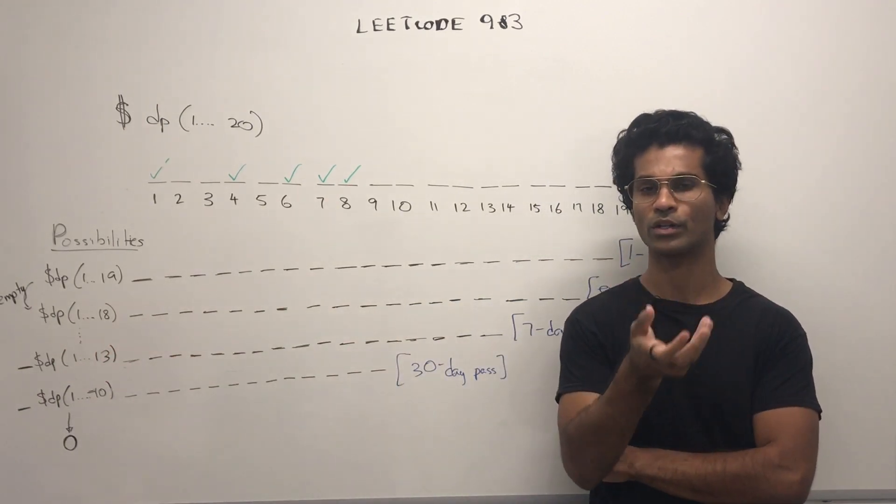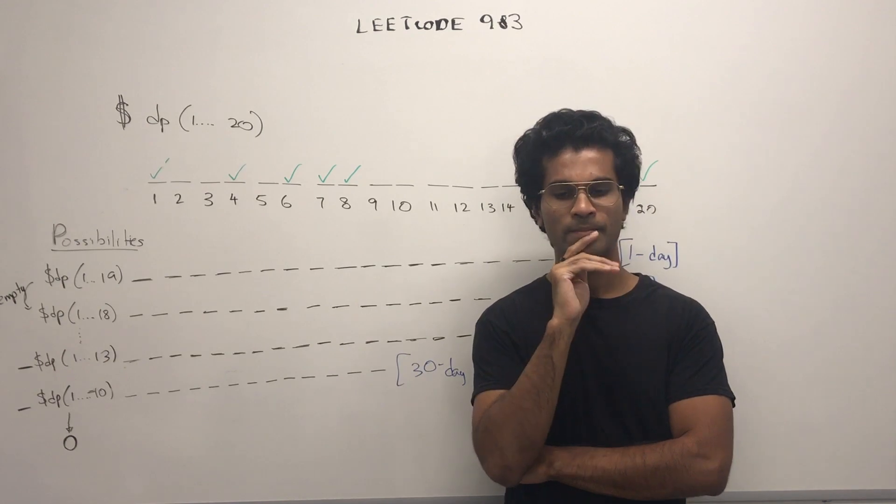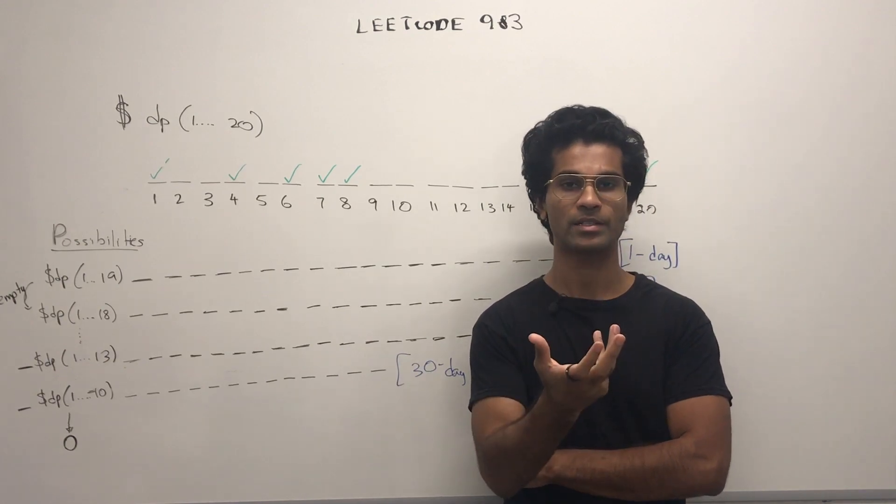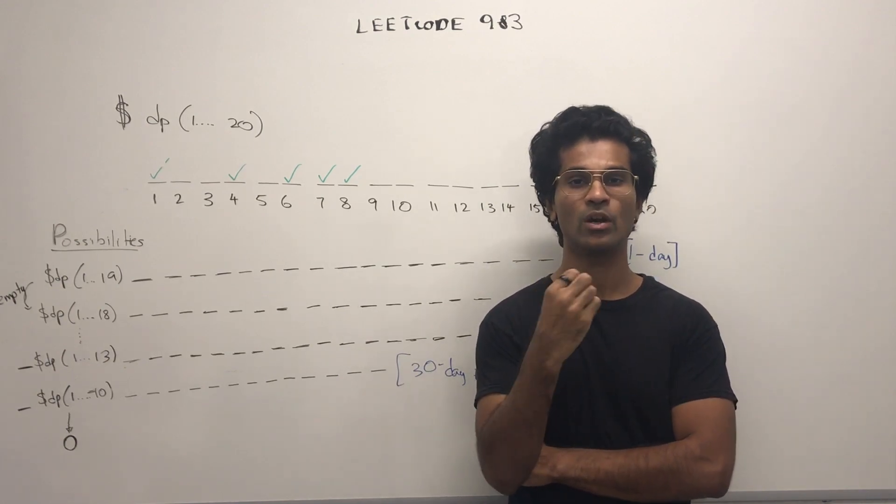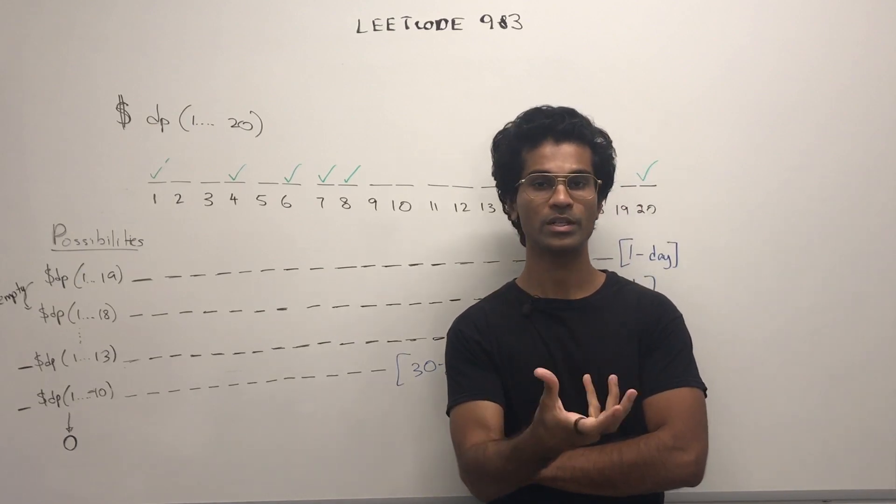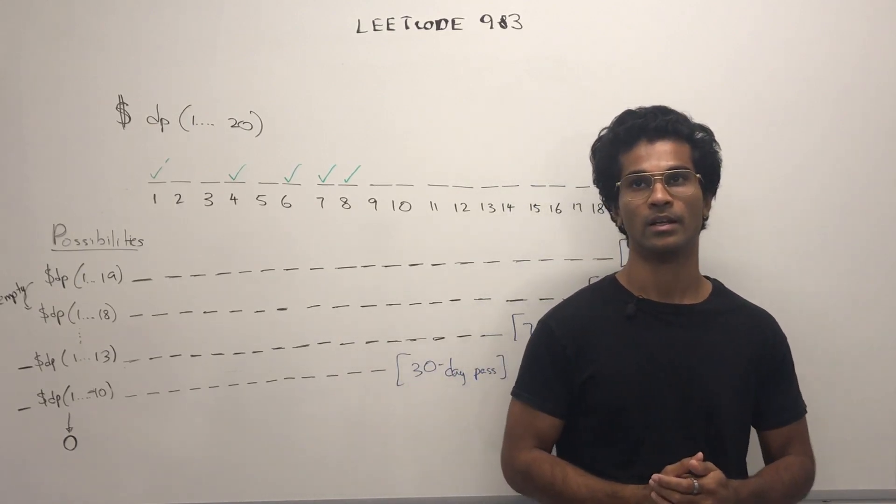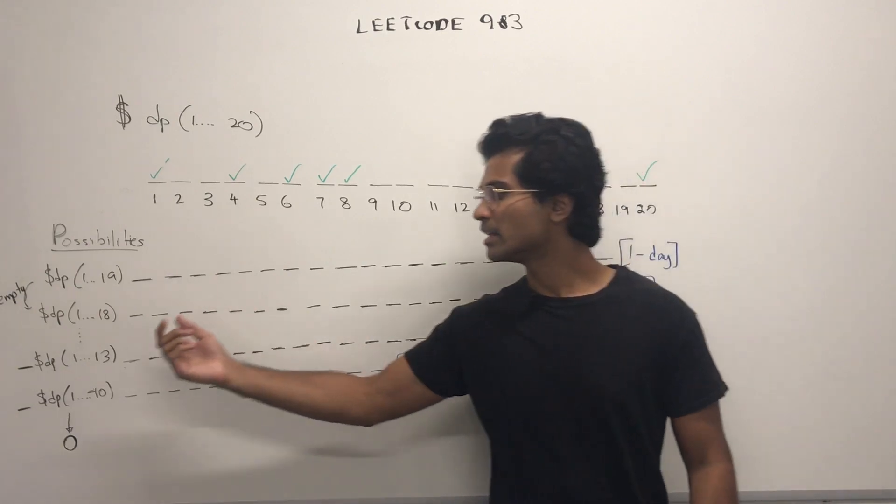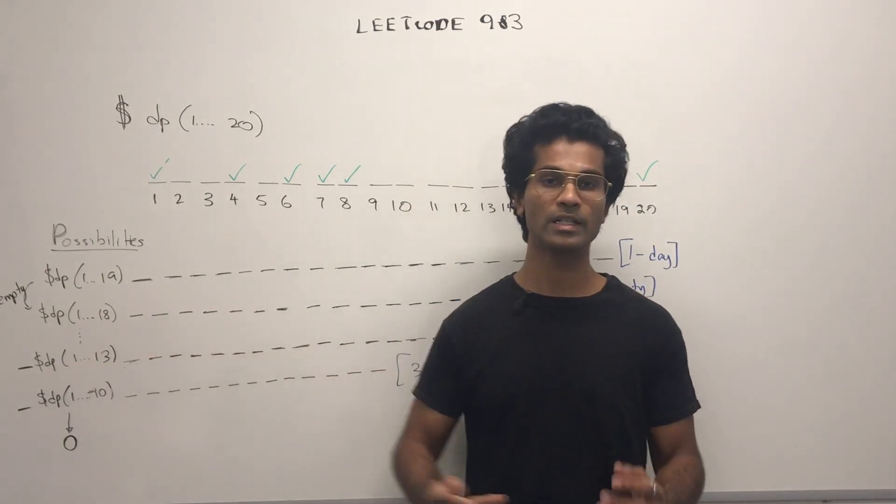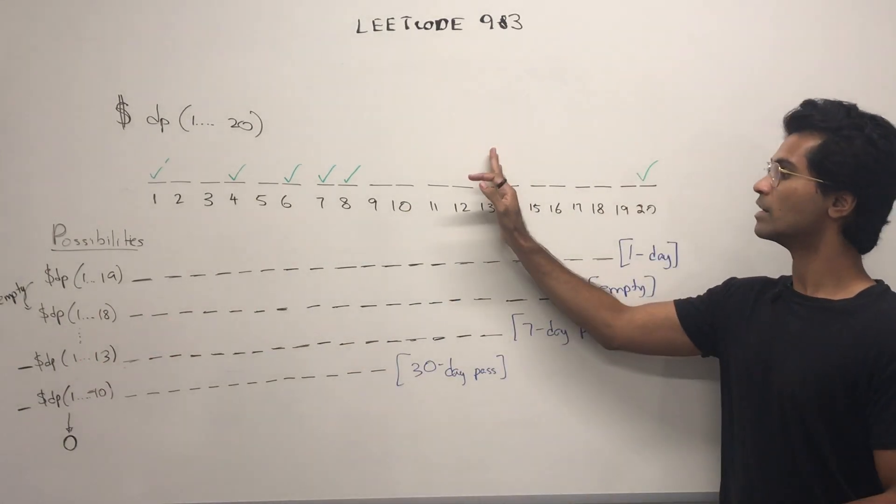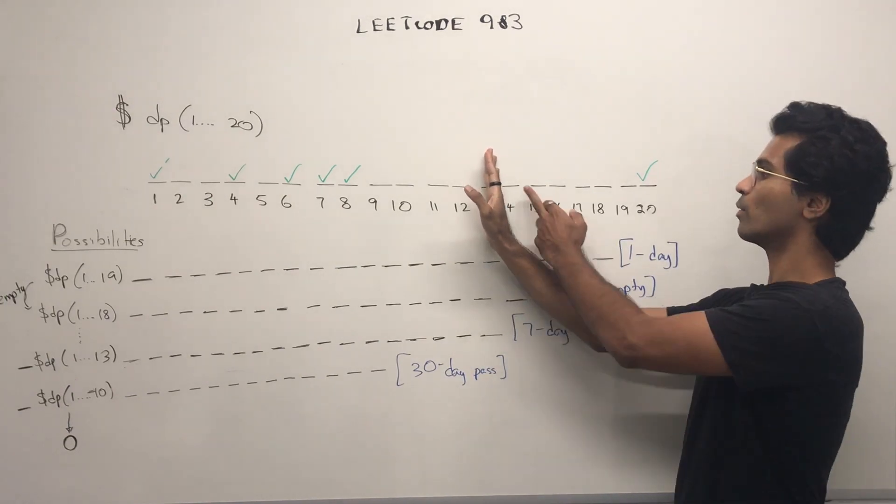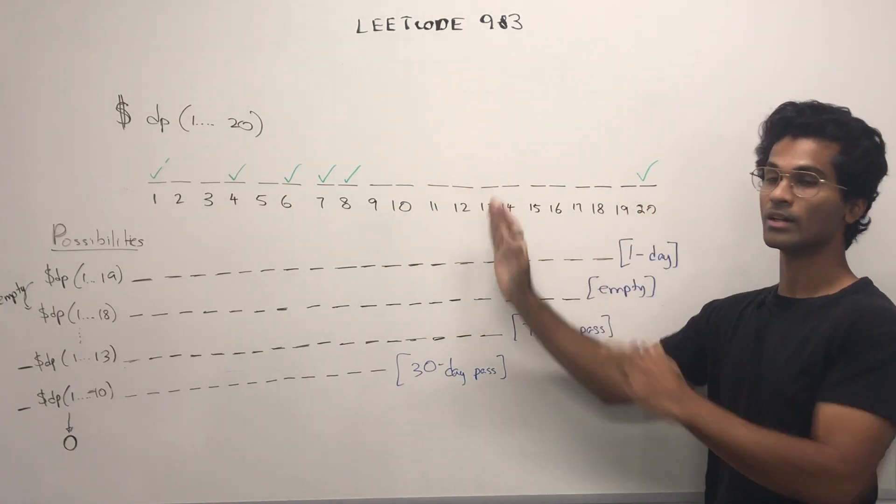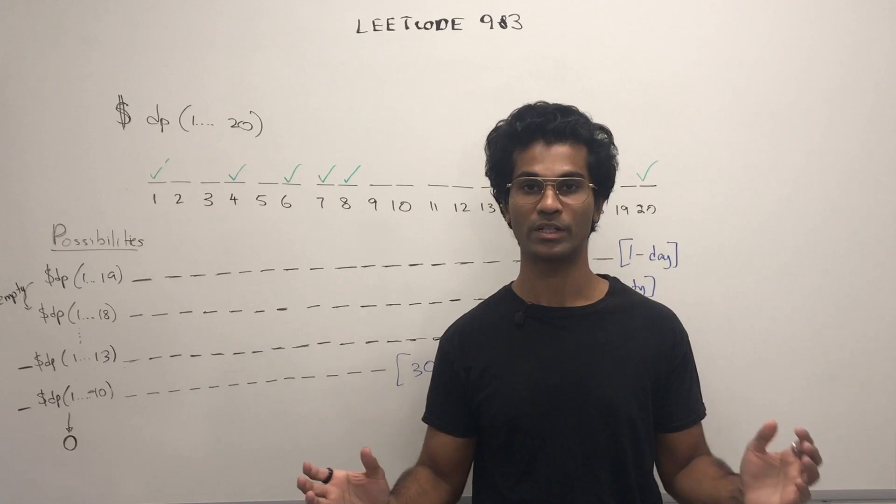How else can I make 1 to 20 smaller? Well, I have a couple more passes, because I just used a one-day pass. What if I covered day 20 using a 7-day pass? I think I can do that. If I can get the minimum cost of 1 to 13, then I know that buying a 7-day pass, 1, 2, 3, 4, 5, 6, 7, will take care of that last range up until 20.